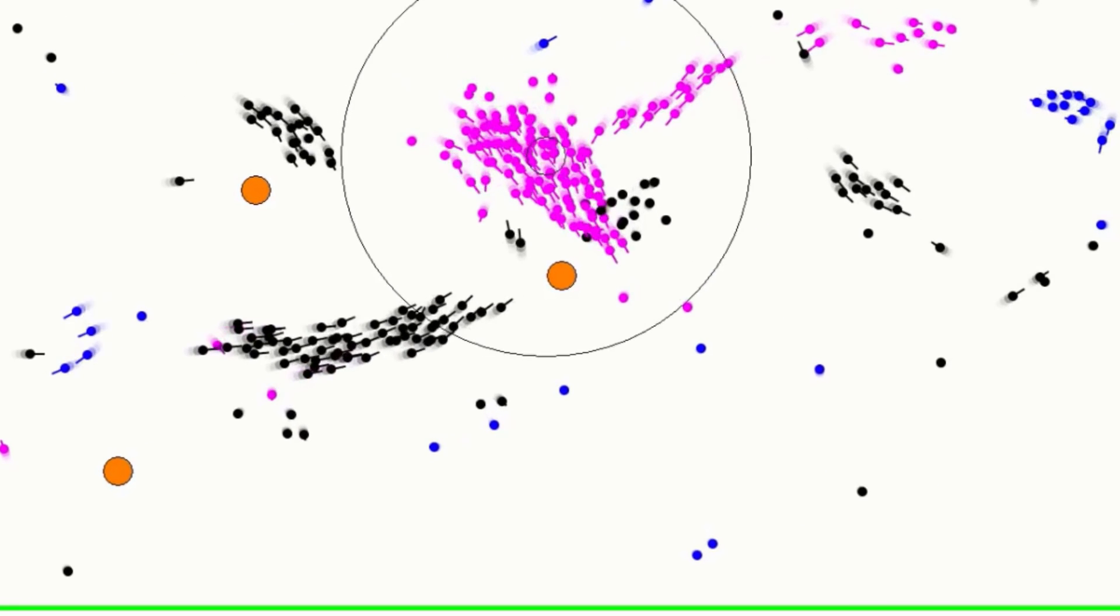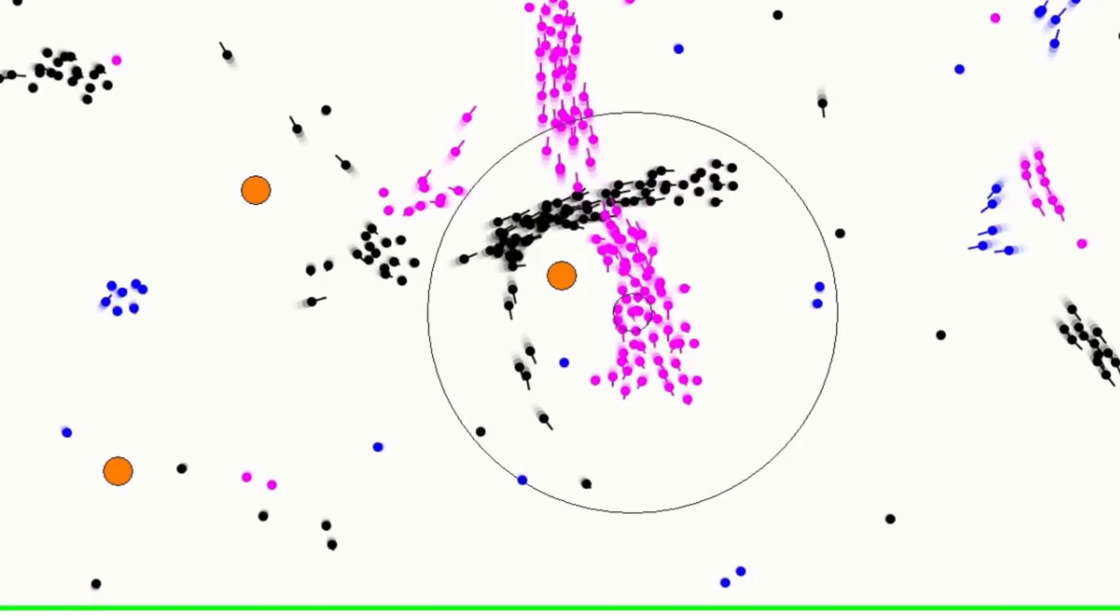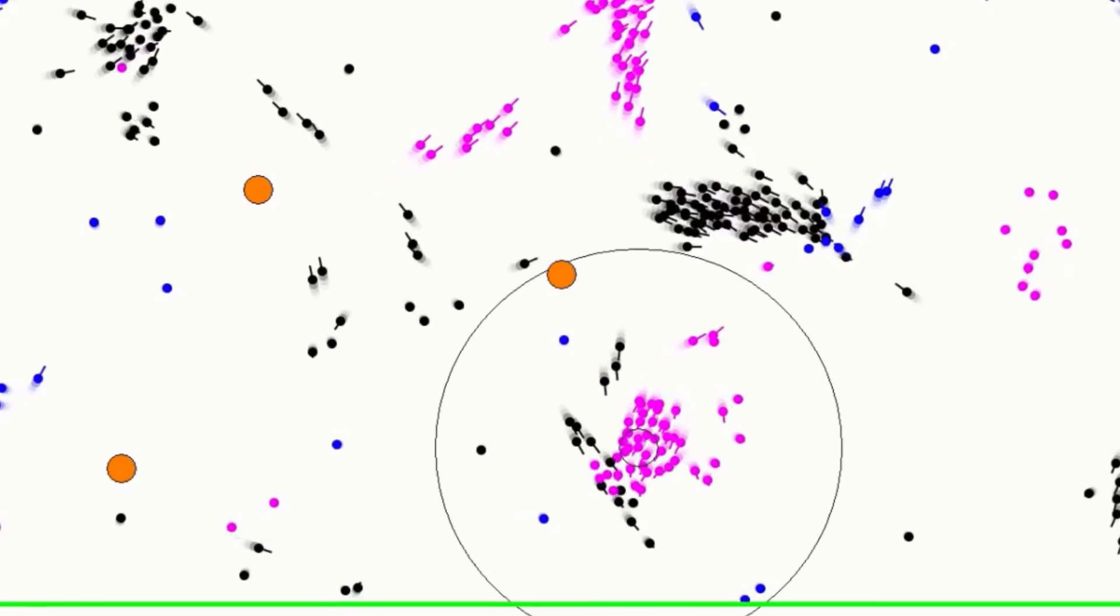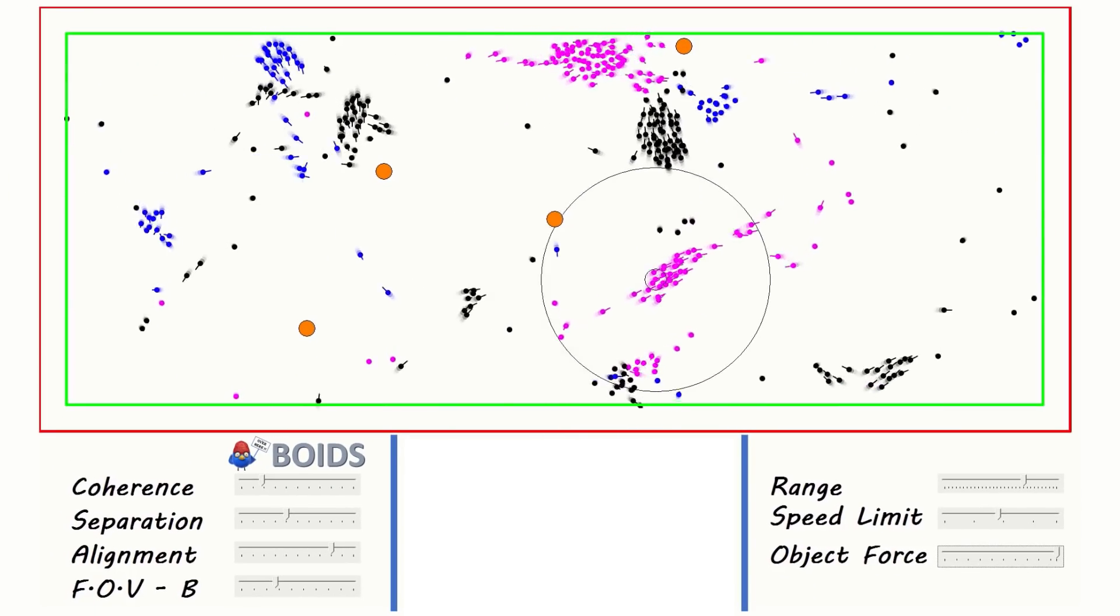The strength of the object avoidance vector is also adjustable by a slider. Set it too high, and it acts like a force field, repelling anything that comes too close.